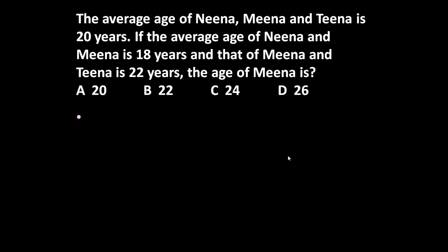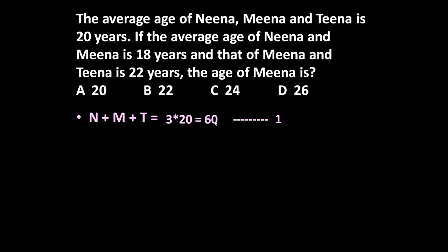The average age of Nina, Mina and Tina is 20 years. It means the total age of Nina plus Mina plus Tina is equal to 3 into 20, which is equal to 60 years. So total age of Nina plus Mina plus Tina equals 60 years. Let us call it equation number 1.